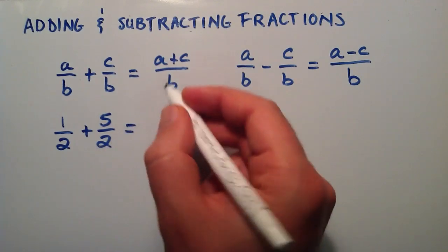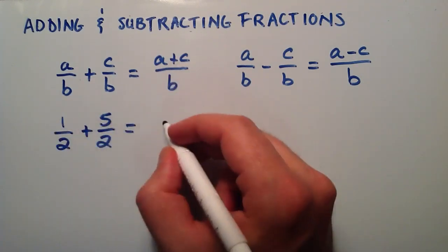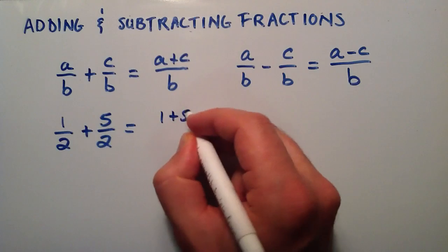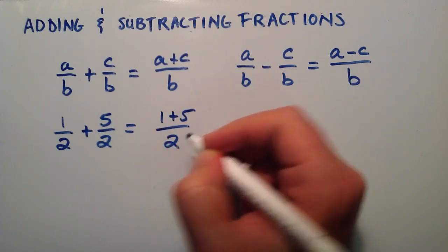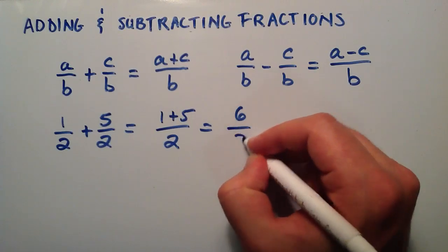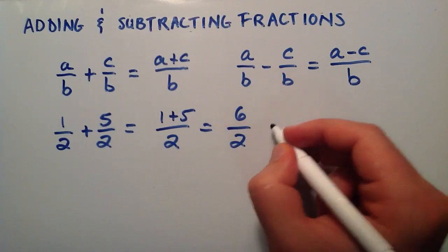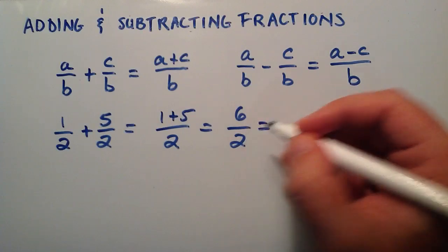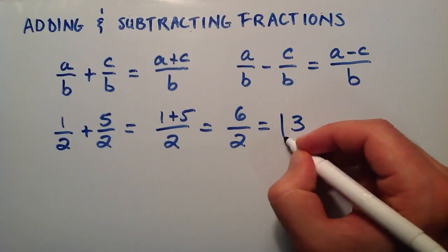We simply add the tops, the numerators. So this is one plus five, divided by two. And one plus five is equal to six, divided by two. And six divided by two is simply three.